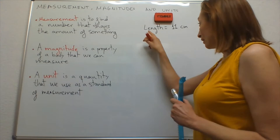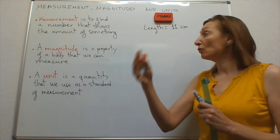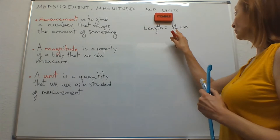I measure the property of this object, the length. This property of an object that can be measured is what we call a magnitude. So, a magnitude is a property of a body that we can measure.